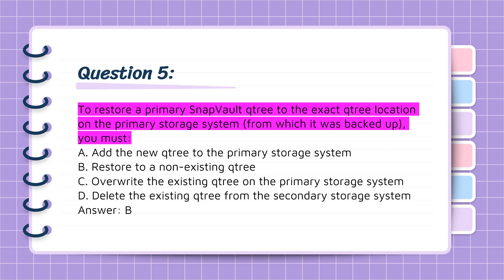Question 5: To restore a primary SnapVault QTree to the exact QTree location on the primary storage system from which it was backed up, you must: A. Add the new QTree to the primary storage system. B. Restore to a non-existing QTree. C. Overwrite the existing QTree on the primary storage system. D. Delete the existing QTree from the secondary storage system. Answer: B.